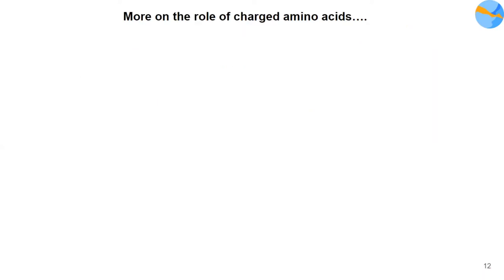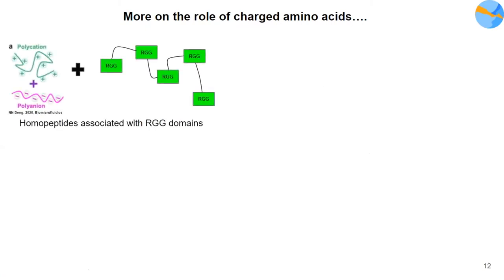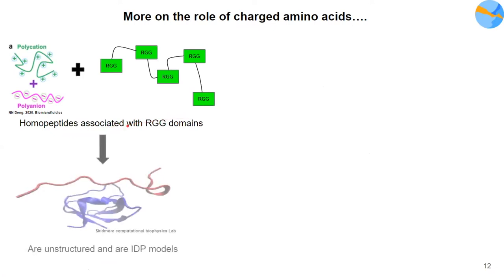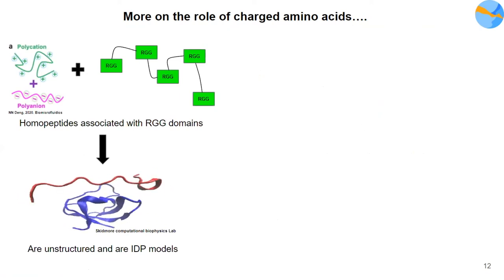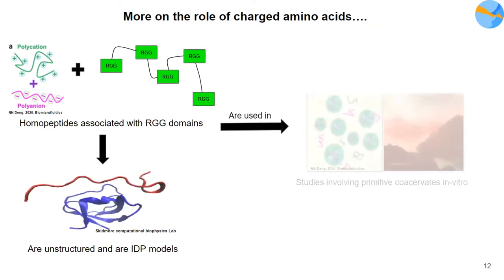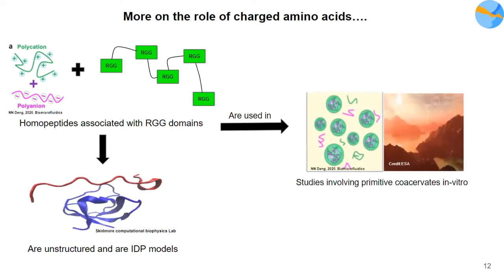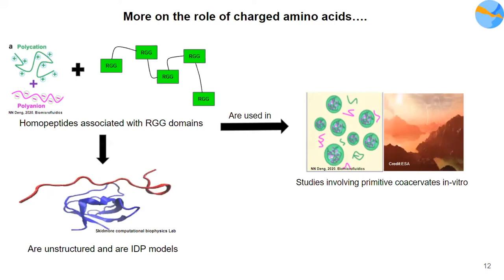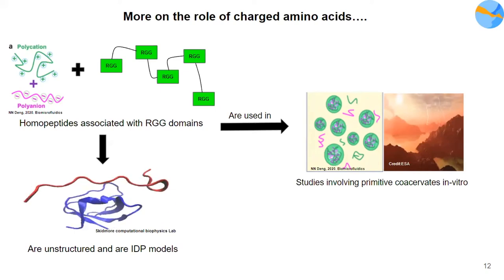There are certain homopeptides like polylysine and polyarginine, which are polycations and polyanions, which have been found to be associated with these RGG domains. Interestingly, these homopeptides are also used in primitive coacervate formation in vitro and in associated studies. This particular aspect links the role of charged amino acid residues in modern IDPs with primitive peptides that probably gave rise to primitive coacervates on early Earth.